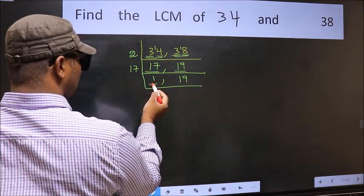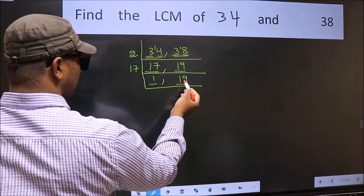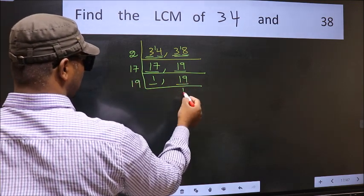Now we got 1 here, so focus on the other number 19. 19 is a prime number, so 19 once 19.